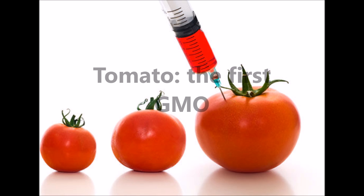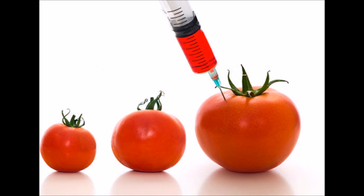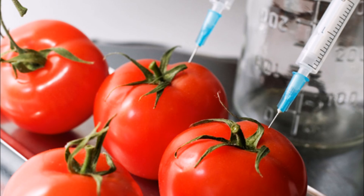Some GMO examples. The tomato was the first GMO. In 1994, in the USA, the tomato was the first transgenic plant put on the market. Its main features are a larger size and longer shelf life.